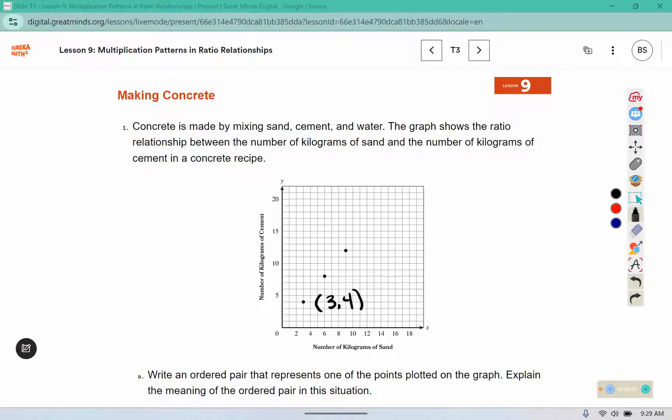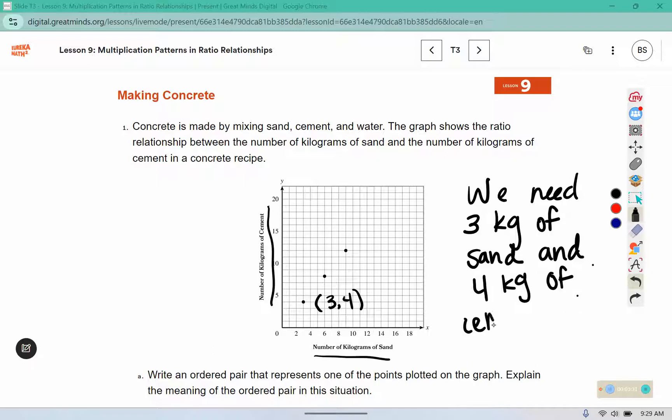Then it says, explain the meaning. So we're looking at the axes to tell us what that means. We need 3 kilograms of sand and 4 kilograms of cement in the mixture for it to have that correct ratio.